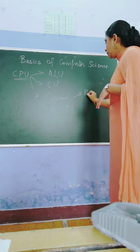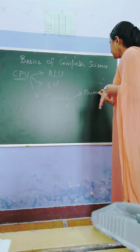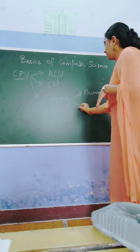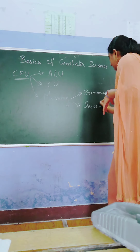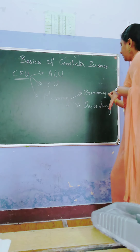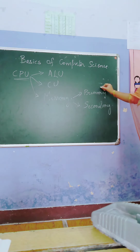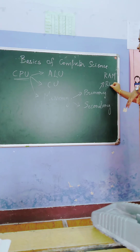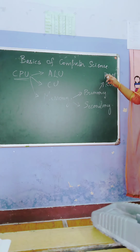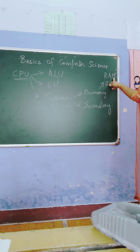Memory is divided into primary memory and secondary memory. Primary memory includes RAM and ROM. Primary memory is again categorized into RAM and ROM. RAM stands for Random Access Memory and ROM stands for Read Only Memory.